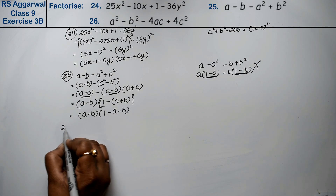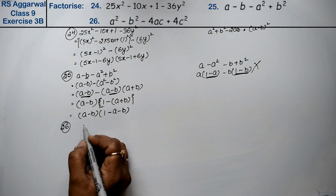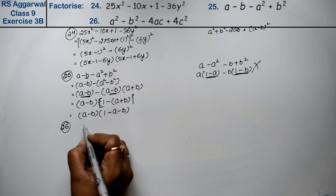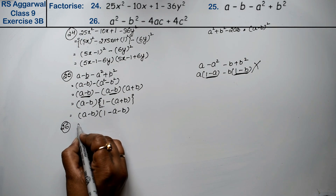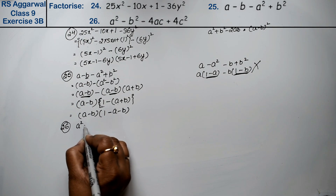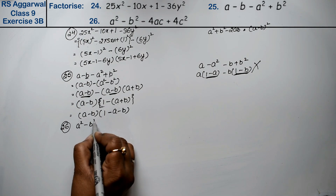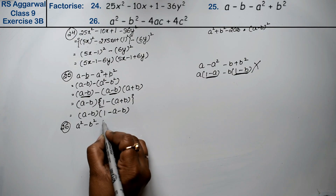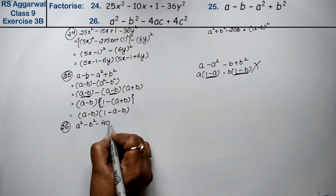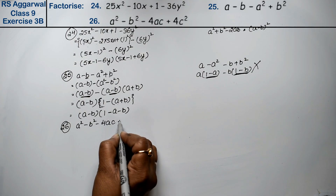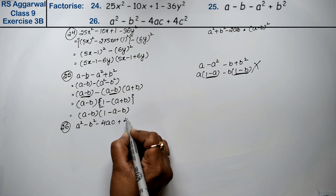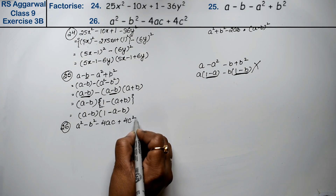Let's do question number 26. Question 26 is: a² minus b² minus 4ac plus 4c².